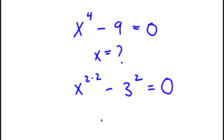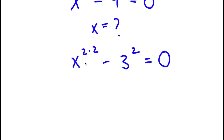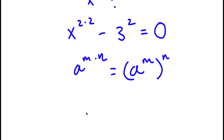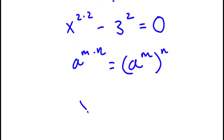If I have something in the form a to the power of m times n, this is simply equal to a to the power of m to the power of n. So in this case, x to the power of 2 times 2 can be rewritten as x to the power of 2, to the power of 2.